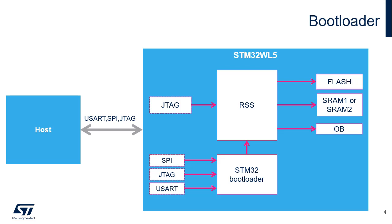The embedded bootloader is used to program flash memory and runs on the CPU, Cortex-M4. It can be used to load content in non-secure memory areas. The embedded secure firmware install process, as part of the root security services, or SFI-RSS, allows the programming of the flash as the embedded bootloader. It runs on the CPU2, or Cortex-M0 Plus, and can be used to load content in both secure and non-secure memory areas.